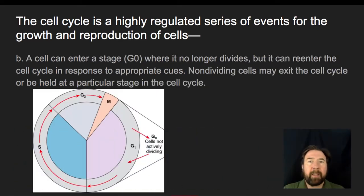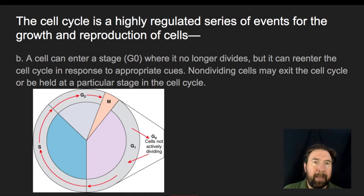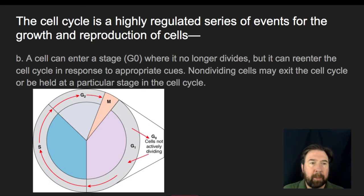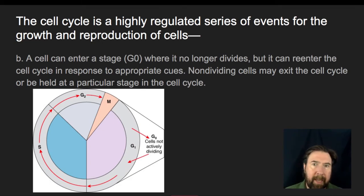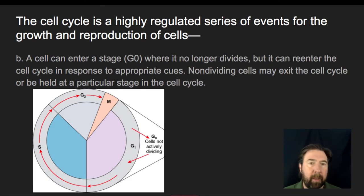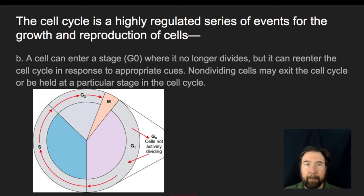Not all cells are going to perpetually divide. Many adult cells in the human body, once they get to their final adult stage — most notably neurons — generally don't divide again. We have lots of adult cells that, for large portions of time, once the cell has been formed, will do an initial growth but are not going to divide.